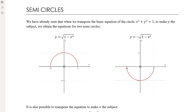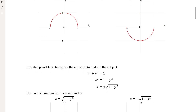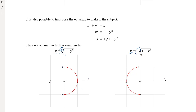We can also transpose the equation to make x the subject, giving x = ±√(1-y²). Where x equals positive numbers, we're on the right-hand side of the circle. Where x equals negative numbers, we're on the left-hand side. So we have four possible semicircles: positive y (top half), negative y (bottom half), positive x (right half), or negative x (left half).